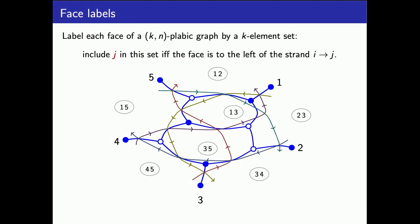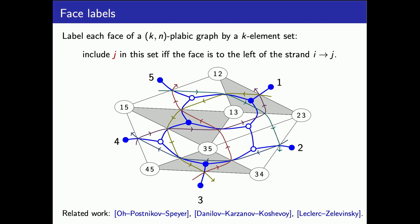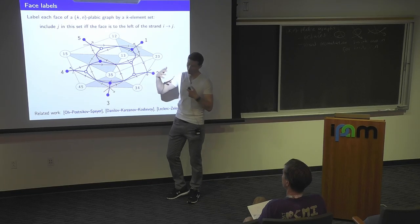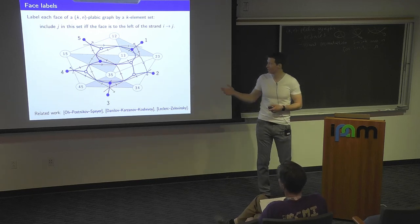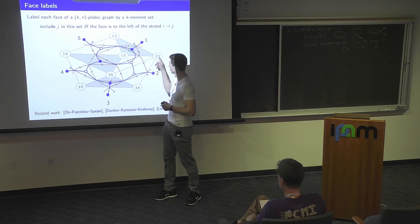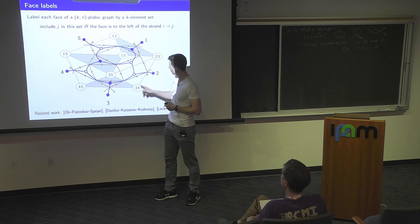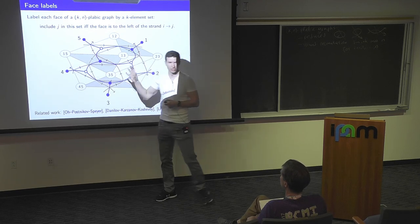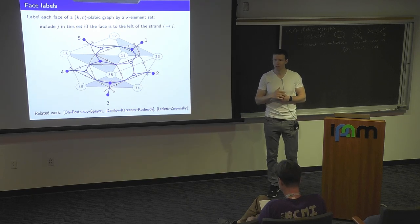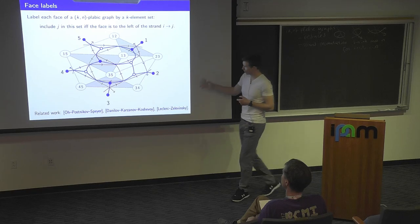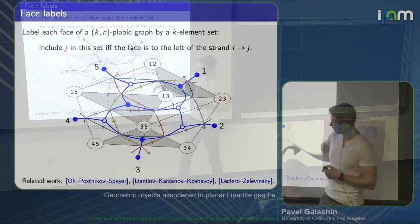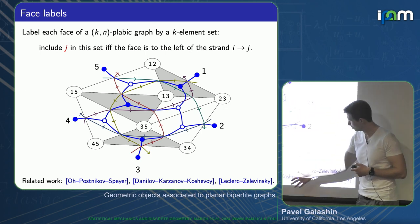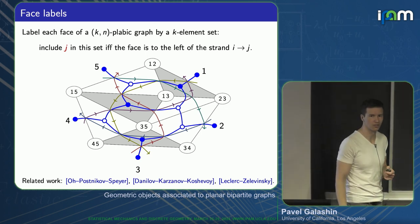You can draw the dual graph whose vertices correspond to faces, so the vertices are labeled by sets. Every white vertex gives rise to the white face of the dual graph. The boundary vertices are always going to be labeled by cyclic intervals — like 12, 23, 34, 45, 51 — for a K-N plebik graph. This construction is important in the work of people who proved the purity conjecture of Leclerc and Zulewinski.